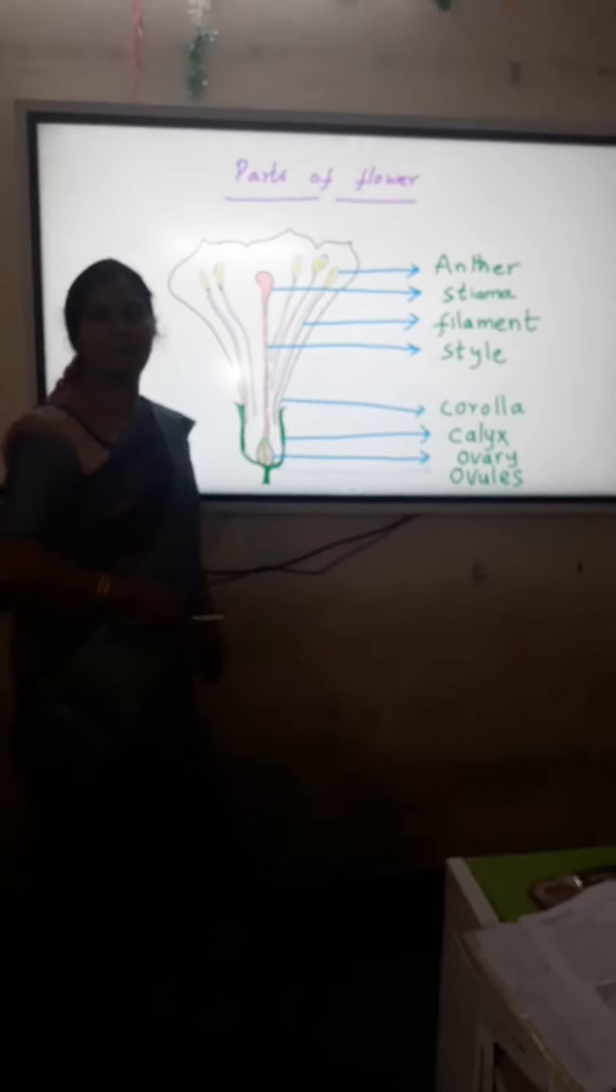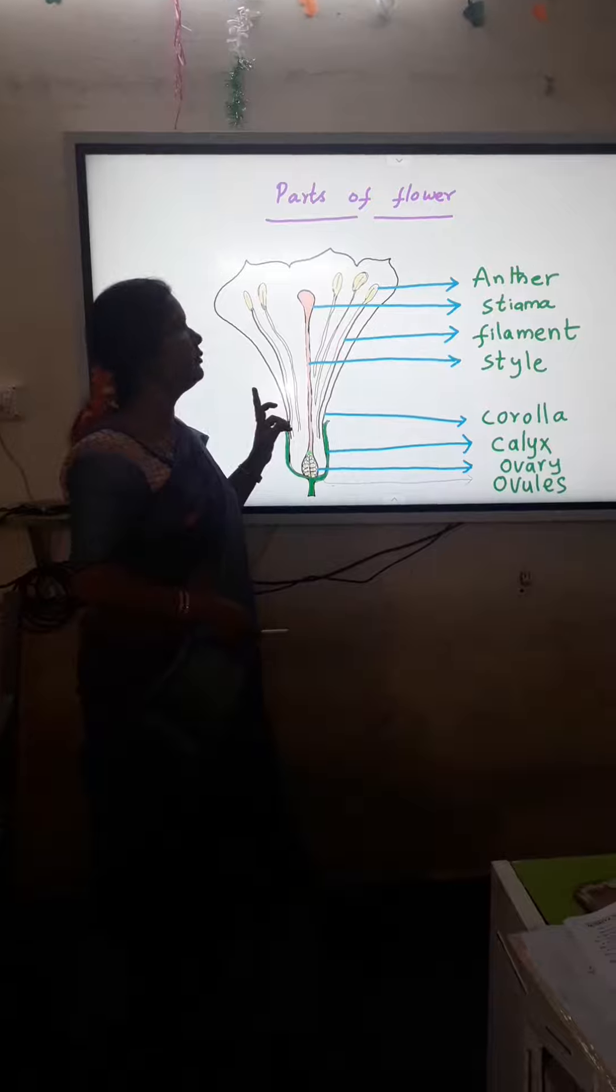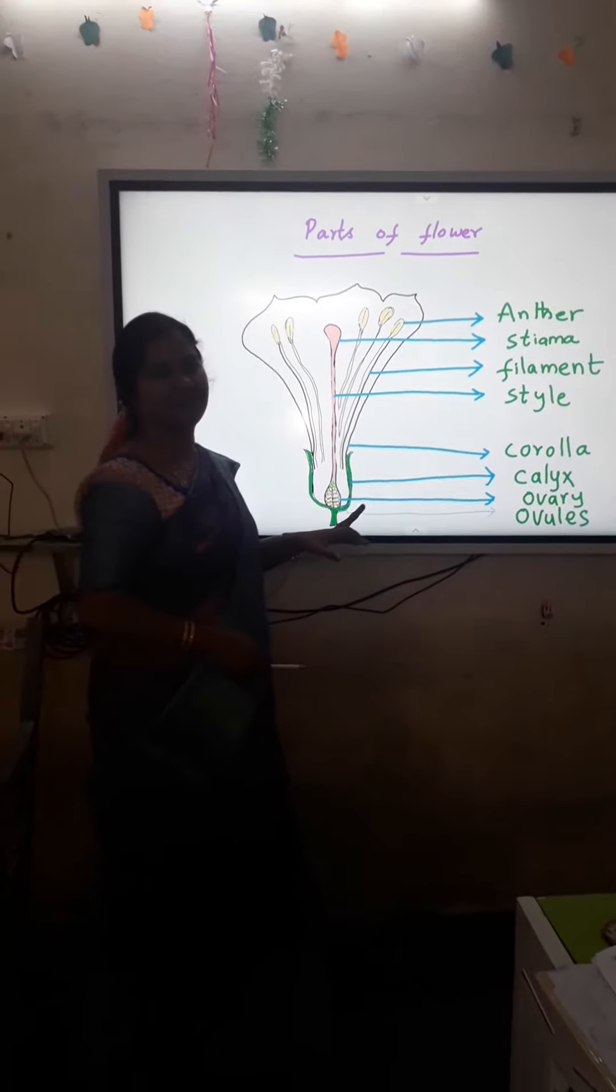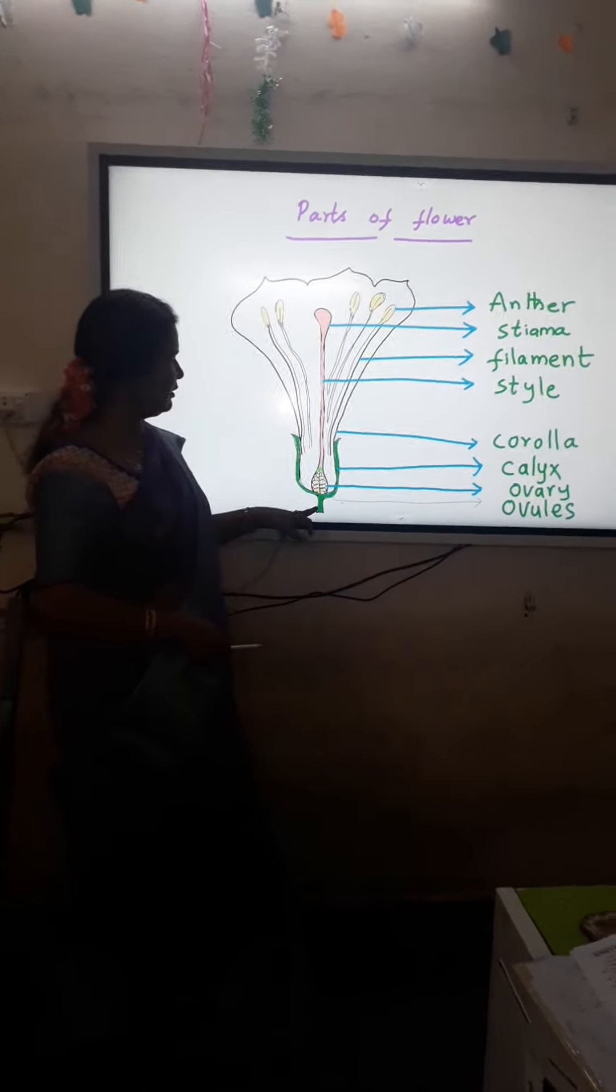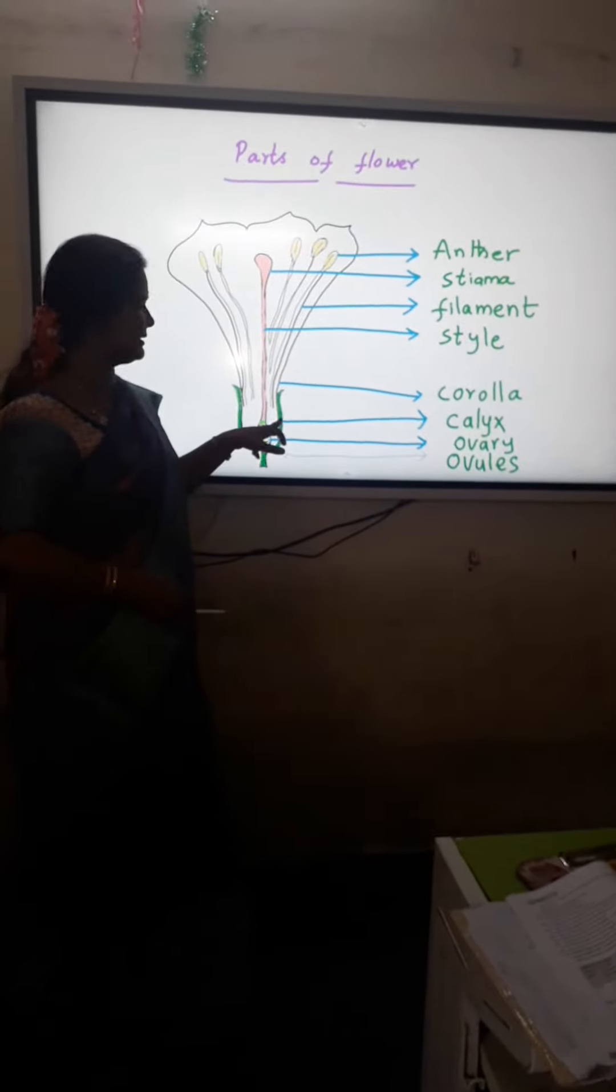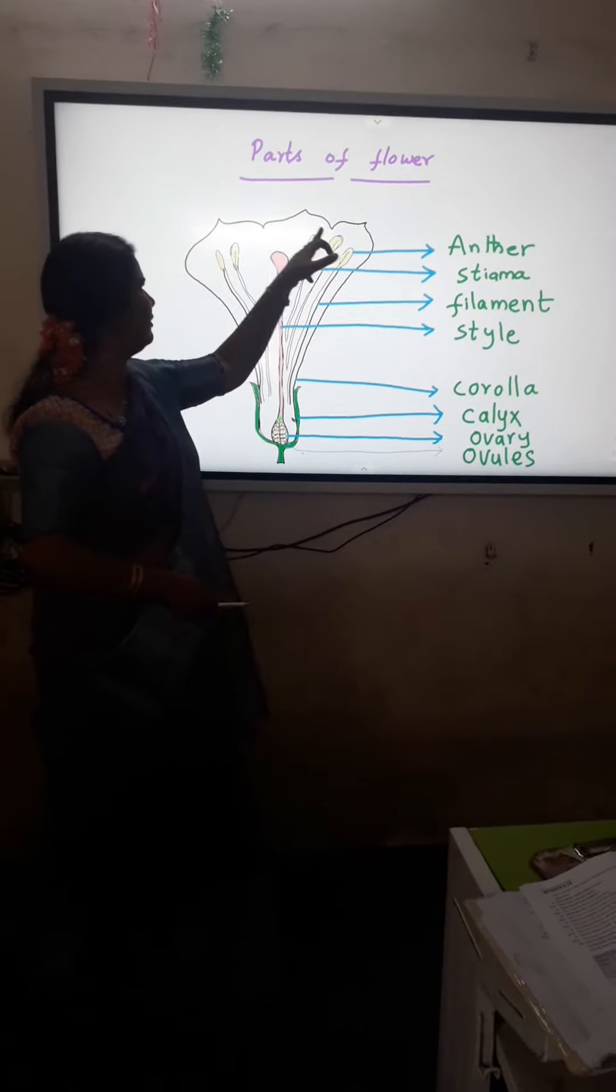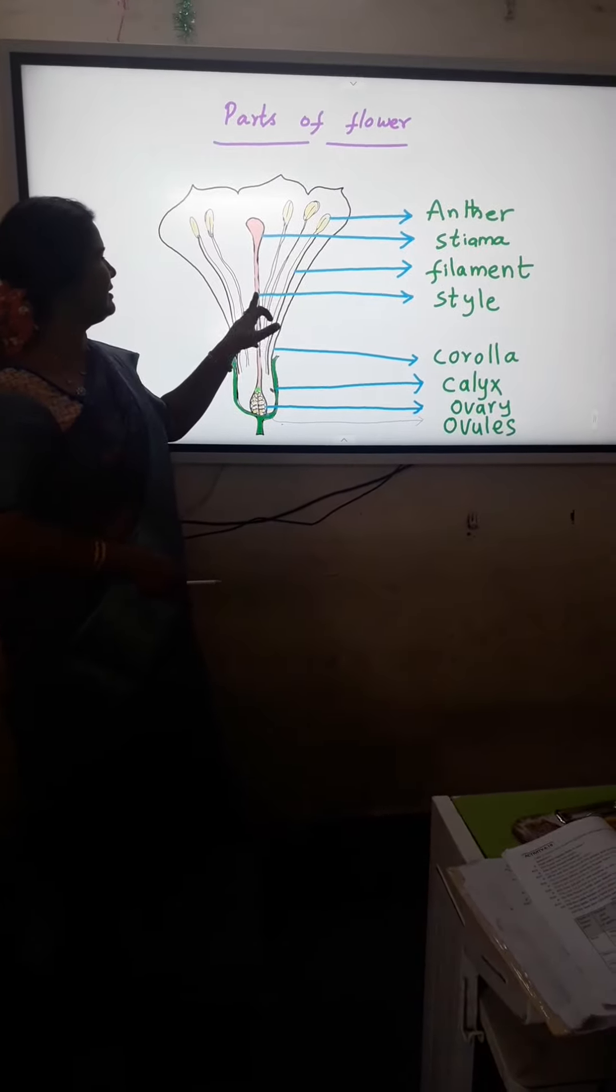Now we are going to learn parts of flower in Dathura. Here Dathura has a section cutting. First of all, the outer layer of flower which is green in color is called calyx. And the white colored part, that is called corolla.